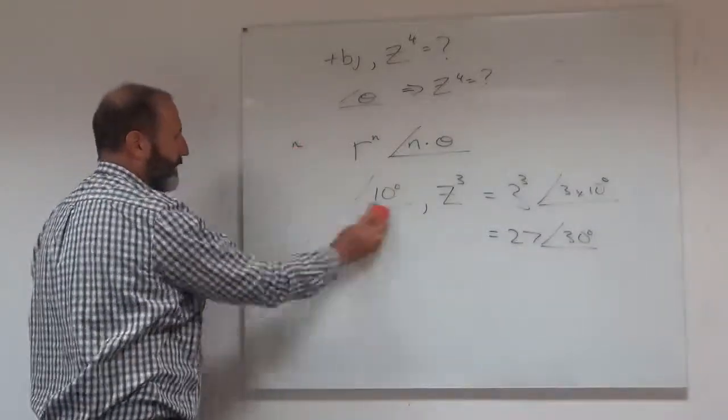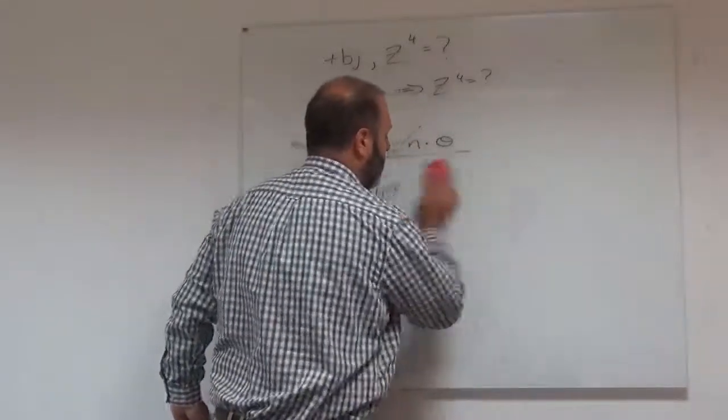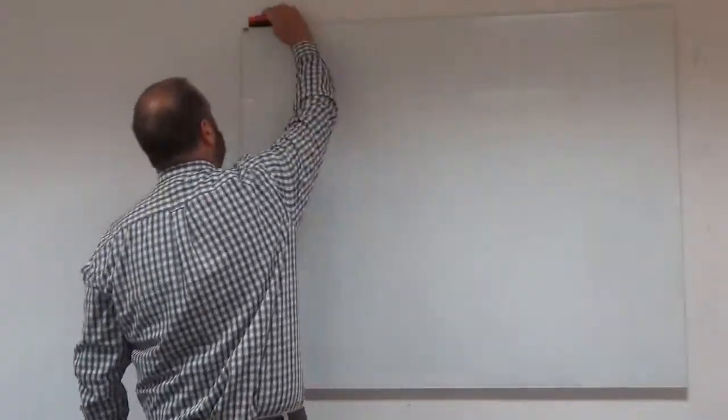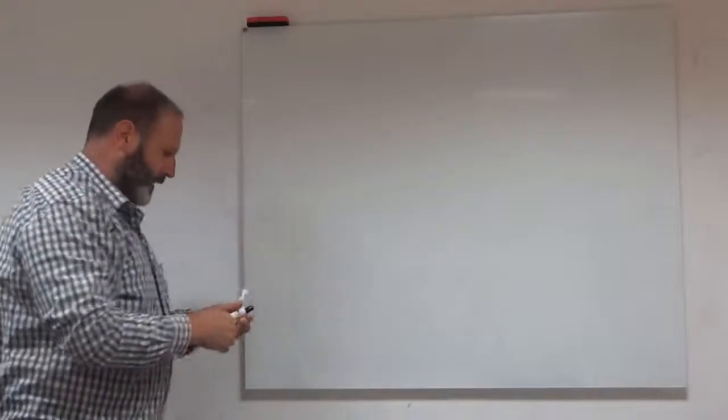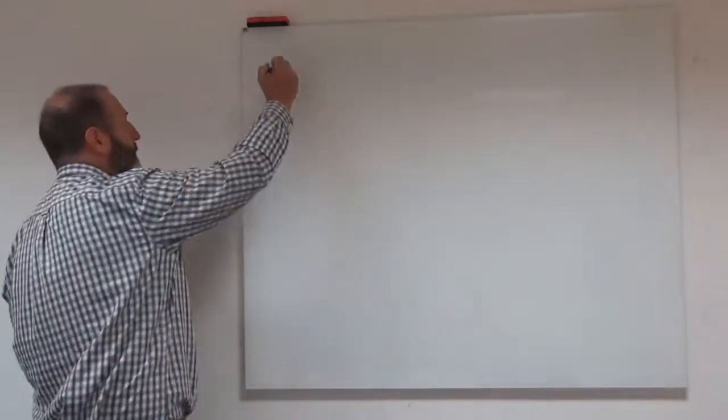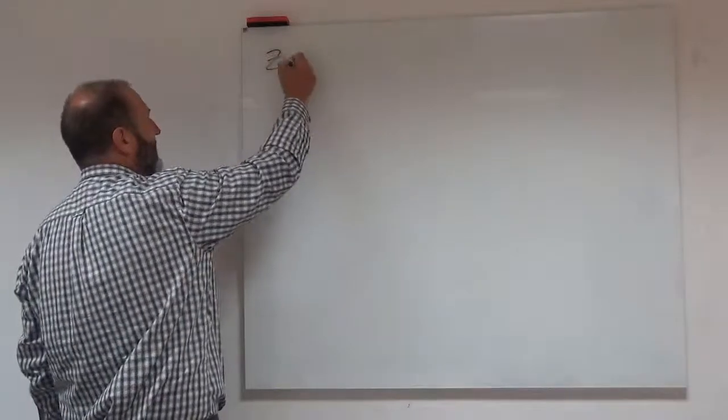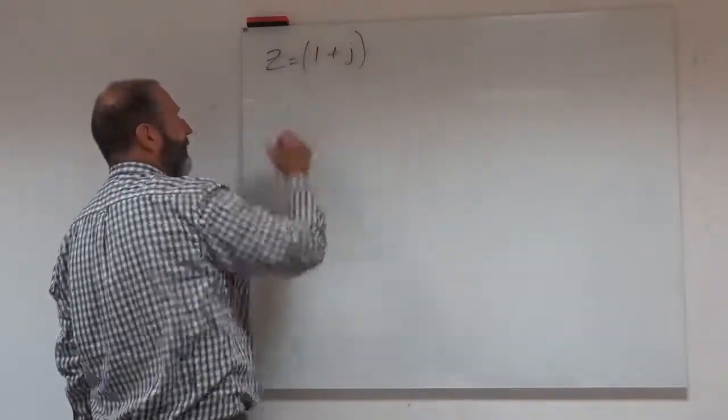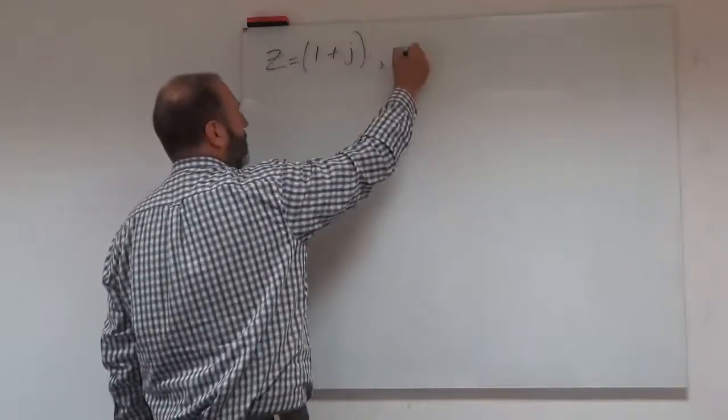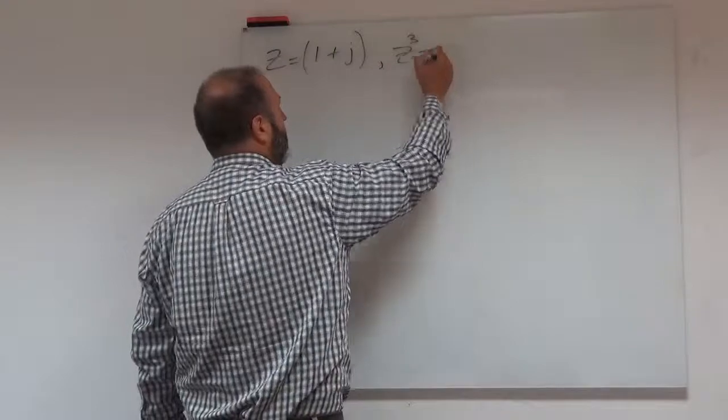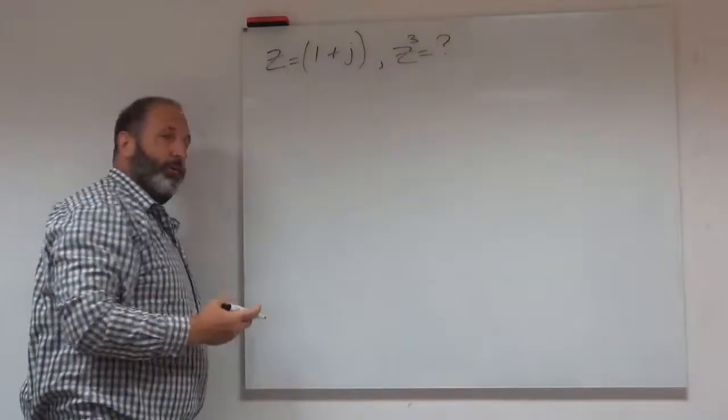So perhaps we'll do a very quick example of that. So again, I'm going to pick a nice example so we can get to polar form quickly. But if I had z equals 1 plus j and I want to work out what z cubed is, let's say, how would I do that?